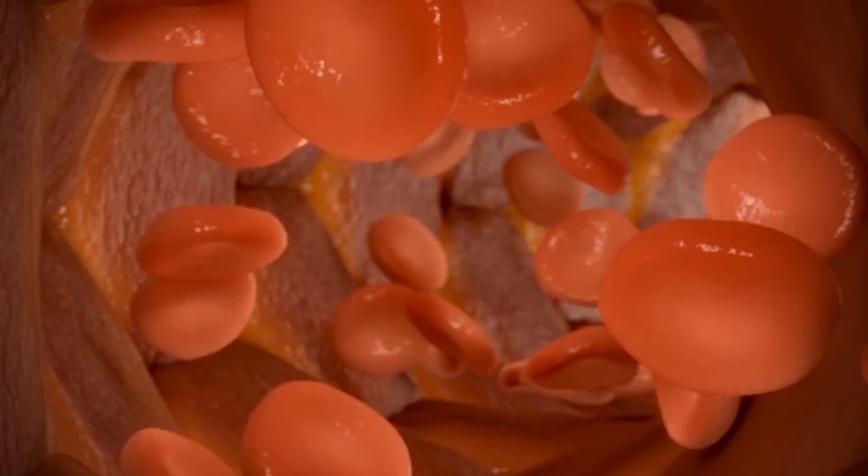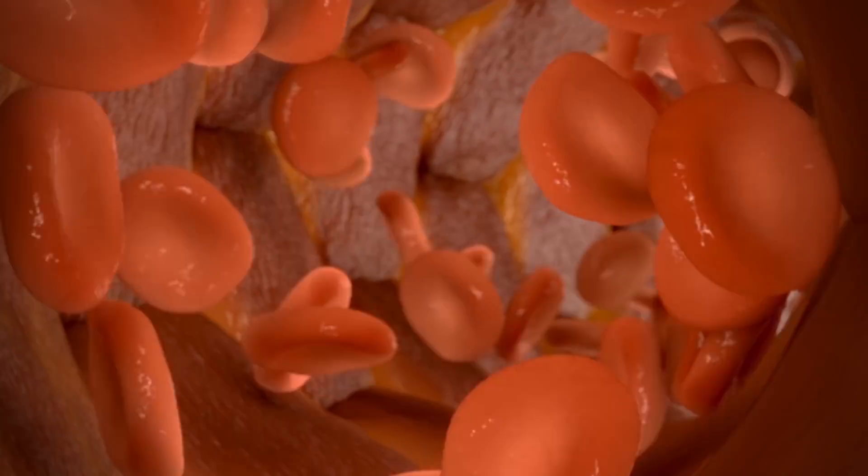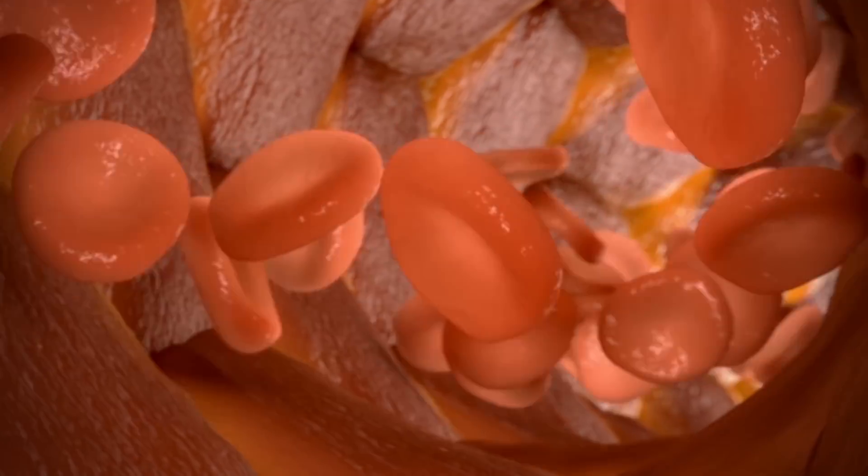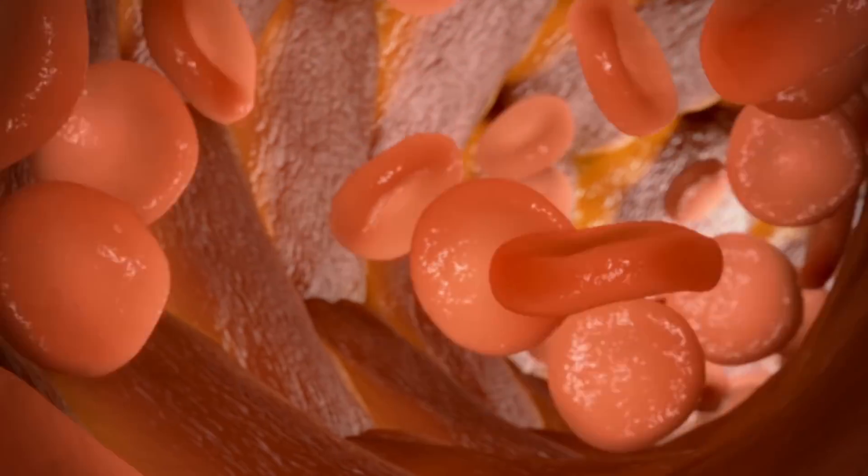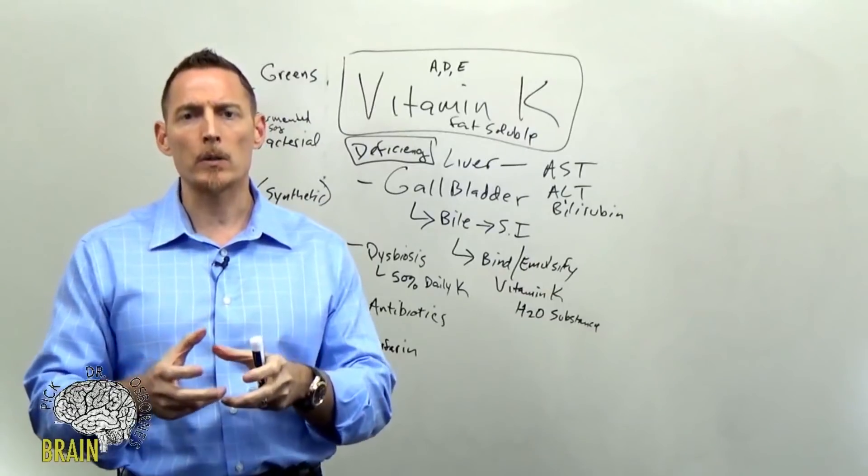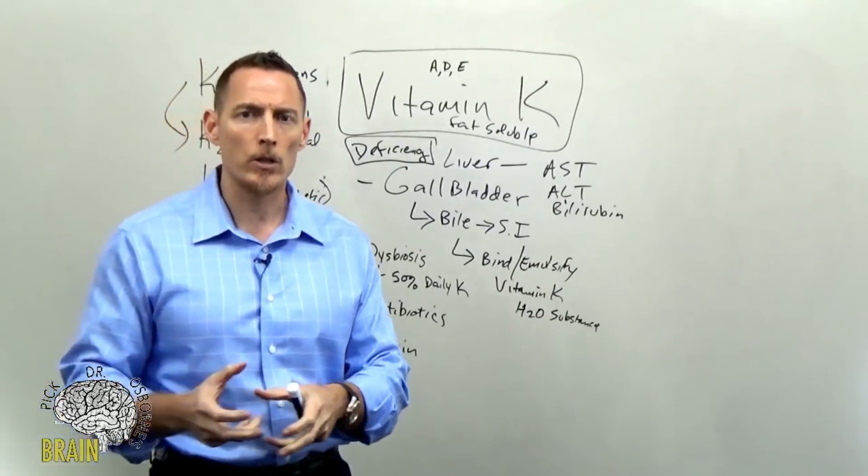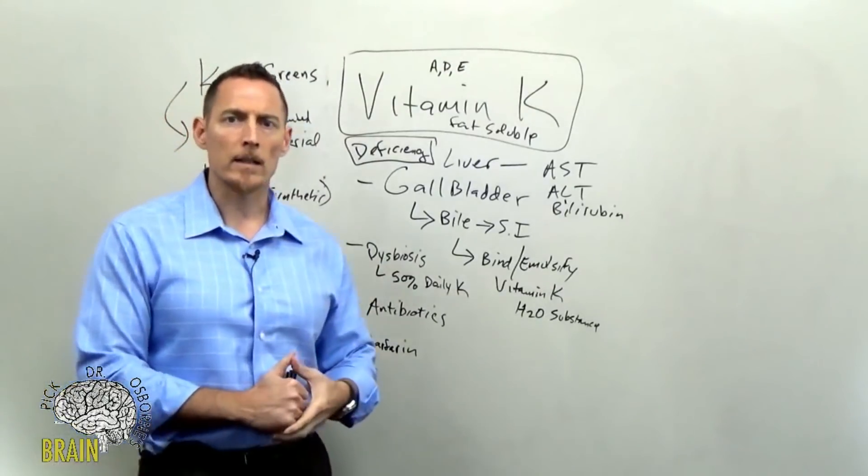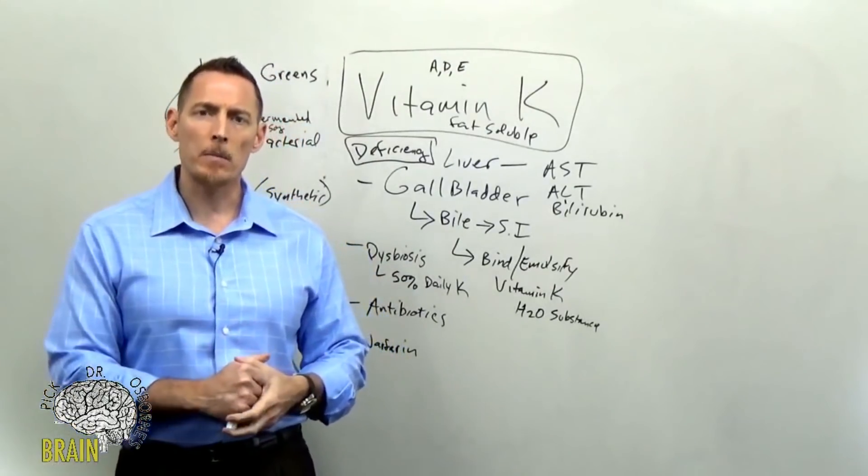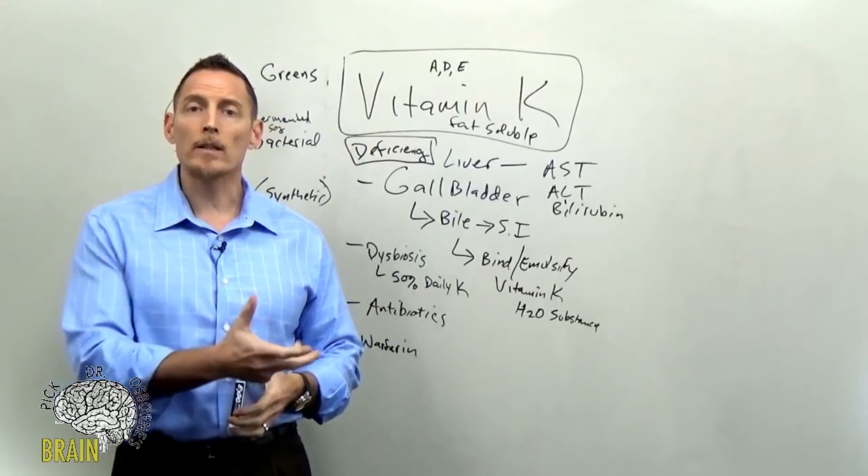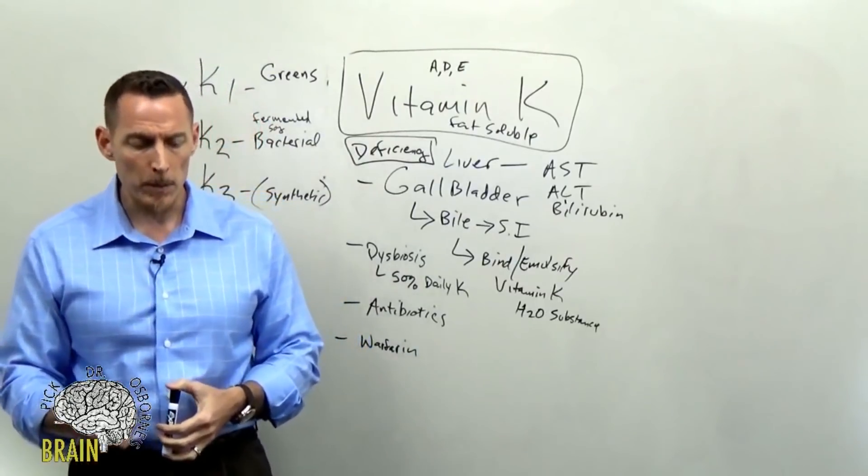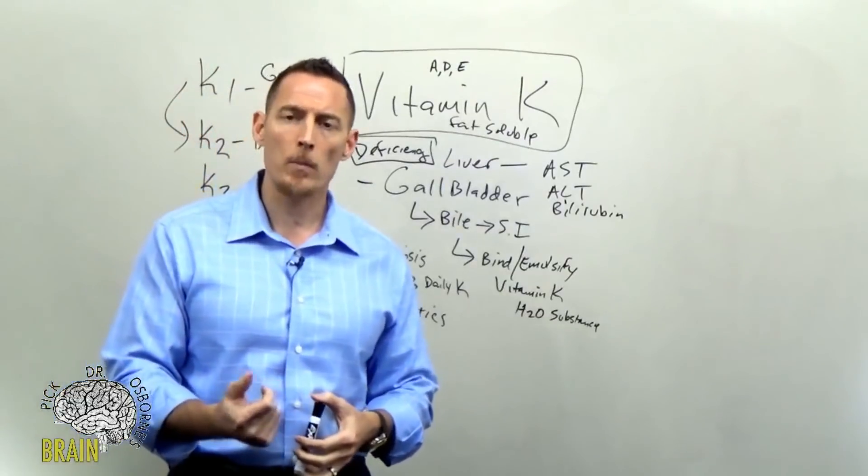They are direct antagonists to the formation of the way that vitamin K works. Vitamin K, there's a process called the decarboxylase process where vitamin K activates different proteins and activates your body's ability to clot your bloodstream. When you're taking a Coumadin or warfarin or one of these anticoagulant medications in that family, you're actually directly blocking how vitamin K does its job.